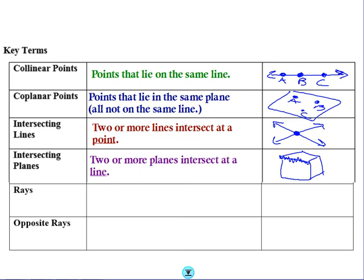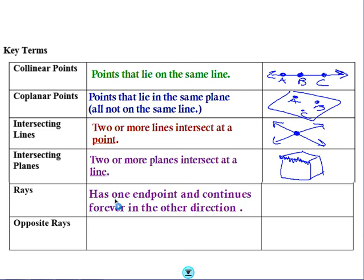The concept of a ray. A ray is something that has one endpoint and then it continues on forever and ever in the other direction. So, it looks something like this.